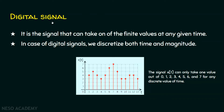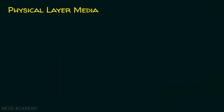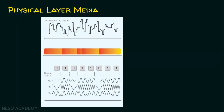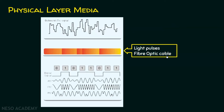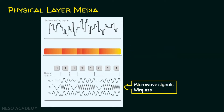So far we have seen analog signal and digital signal. Why do we need to deal with signals? Because in physical layer media, we are ultimately focusing on signals. We have wired media as well as wireless media. A copper cable deals with electrical signals, a fiber optic cable deals with light pulses or light signals, and wireless medium deals with microwave signals.